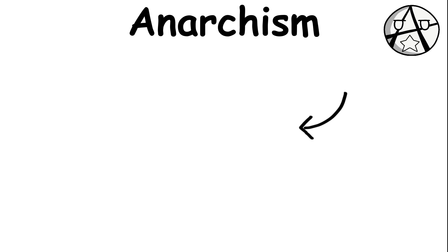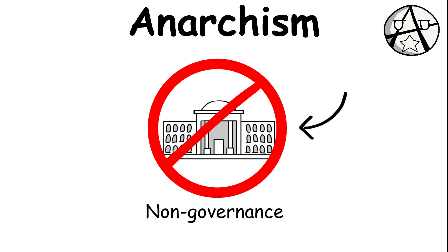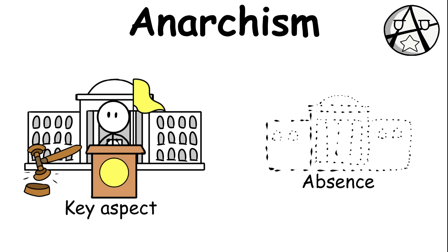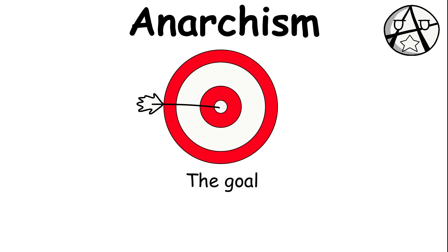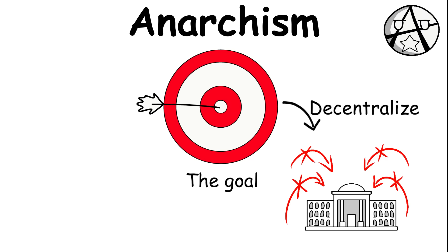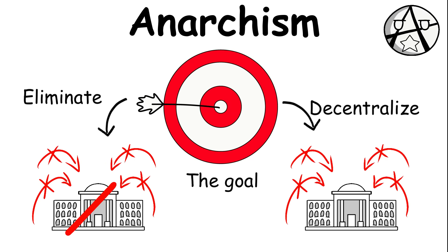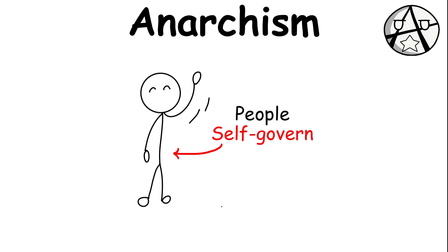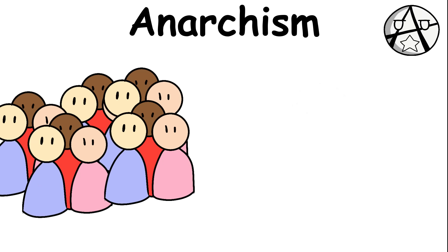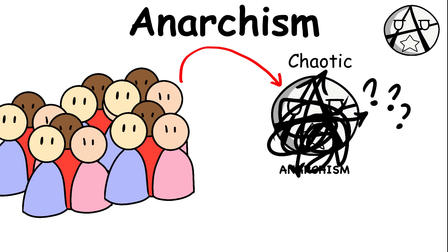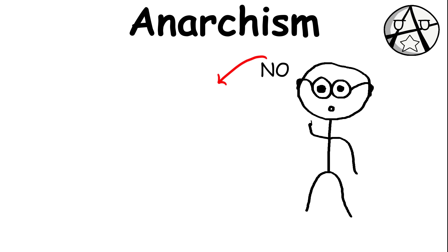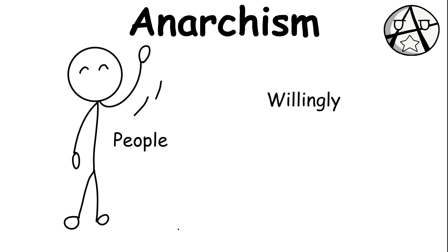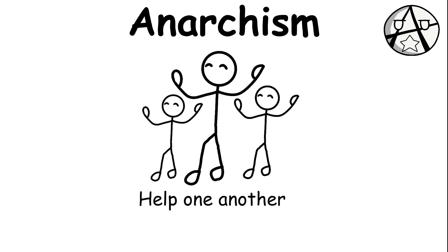Anarchies are often called non-governance because the key aspect of this form of government is the absence of a central government. The goal of an anarchist system is to not only decentralize the power of the government, but to eliminate the government itself, to allow the people to self-govern. The popular belief is that an anarchist government tends to be chaotic, but that's not the case, because one of the most important goals of anarchism is to allow people to volunteer willingly and freely to help one another for the improvement of the community.